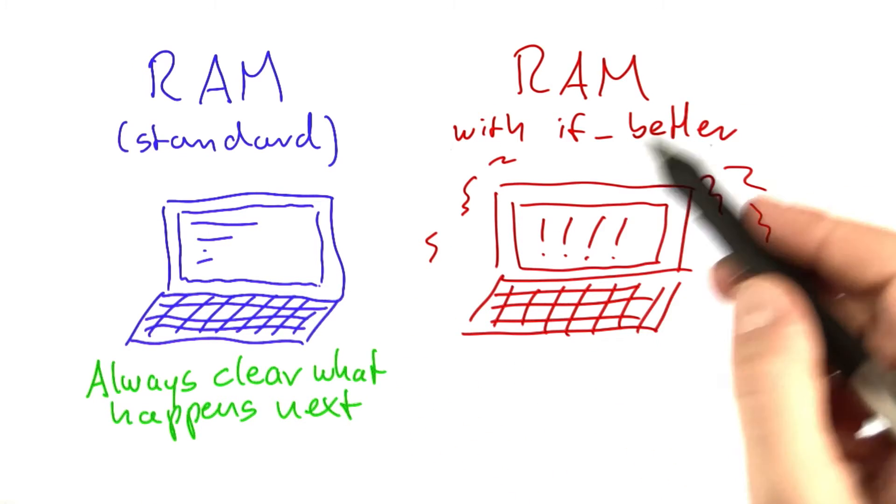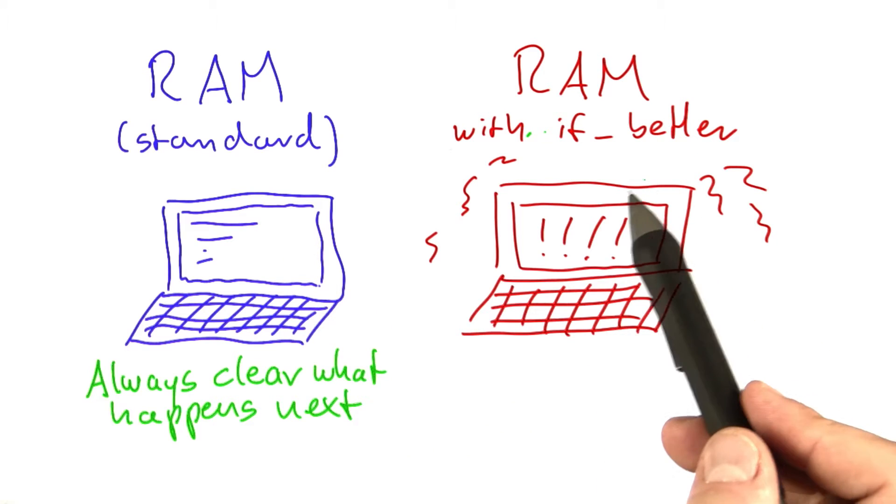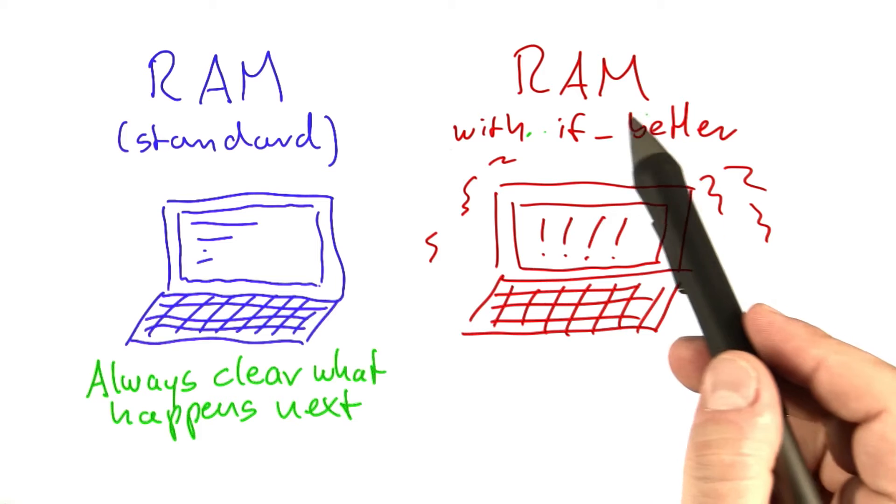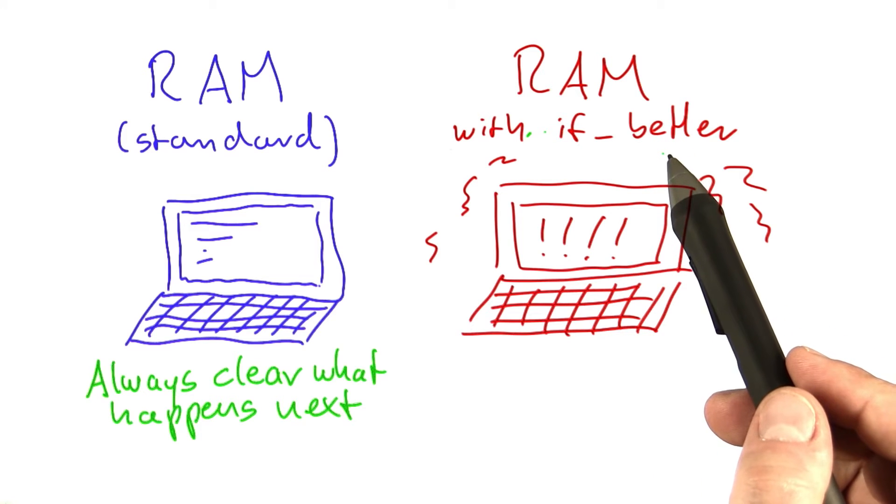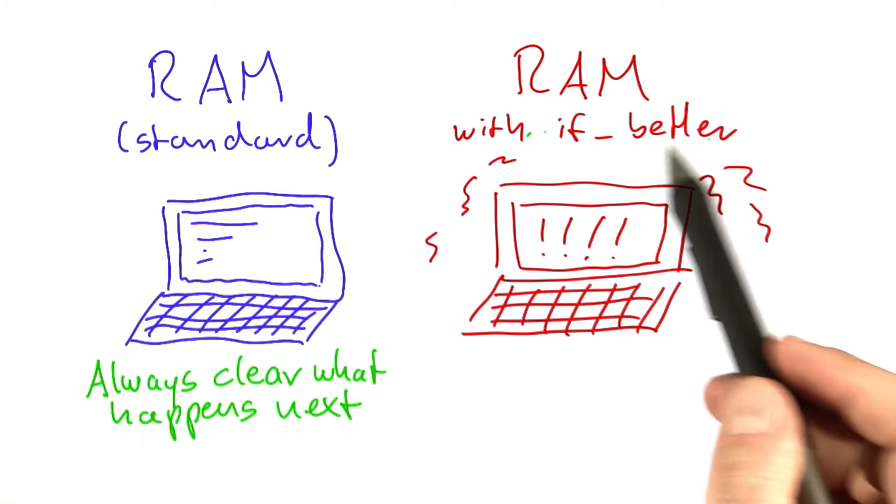And not so with the RAM that uses the if better function. Well, actually most of the time unless this function is used, it's still clear what happens next. But every time this function here is called, we don't really know what's going to happen next. It seems as if only this function here kind of knows.